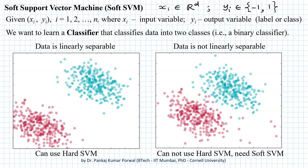In this session we are going to learn about the soft support vector machine algorithm for classification problems. We are given n data pairs of the form (xᵢ, yᵢ), where xᵢ is the input variable and yᵢ is the output variable, label, or class. In general, xᵢ belongs to a d-dimensional space. In SVM, yᵢ is taken as -1 or +1, which differs from other classification algorithms where yᵢ is normally 0 or 1.